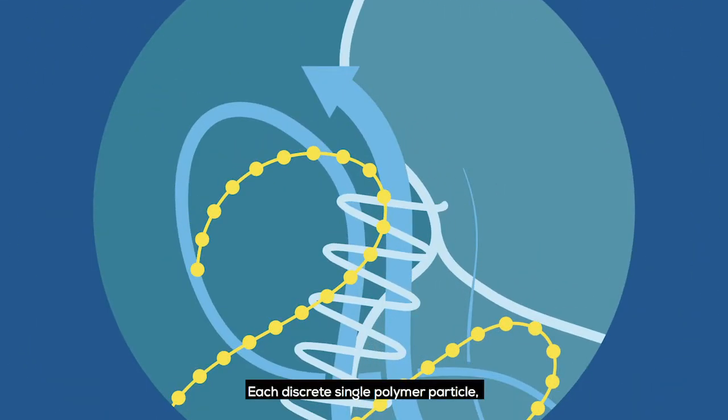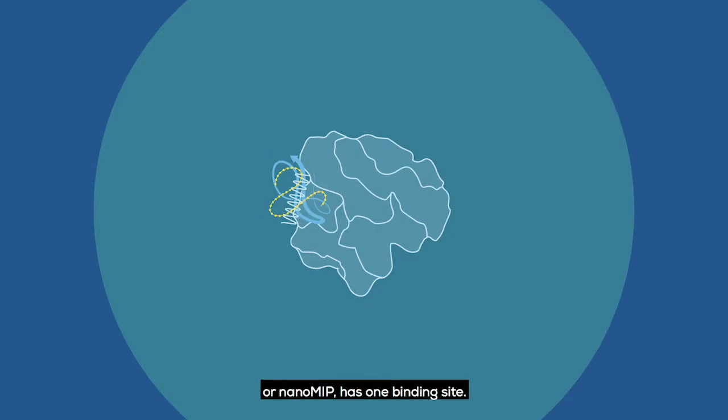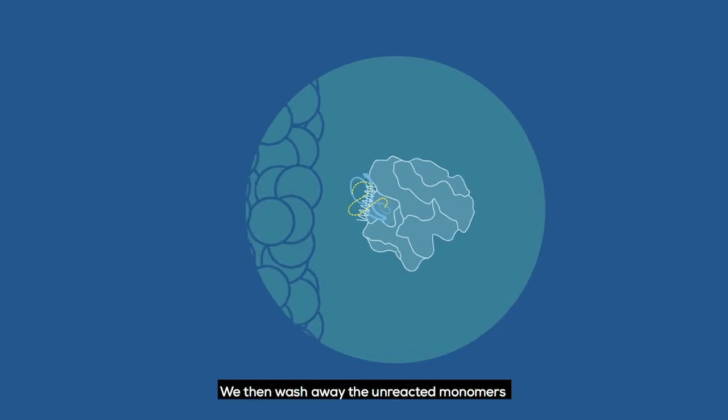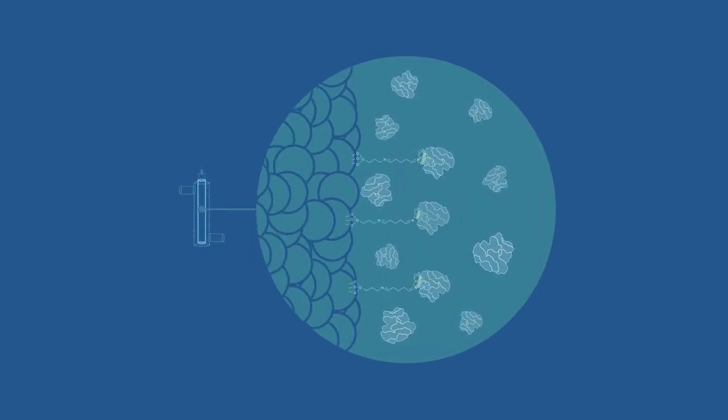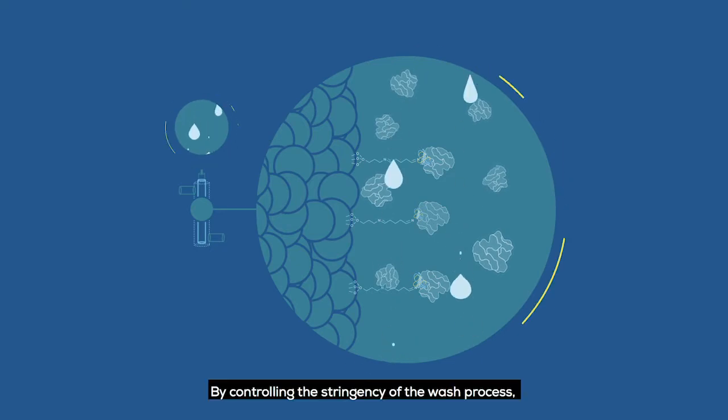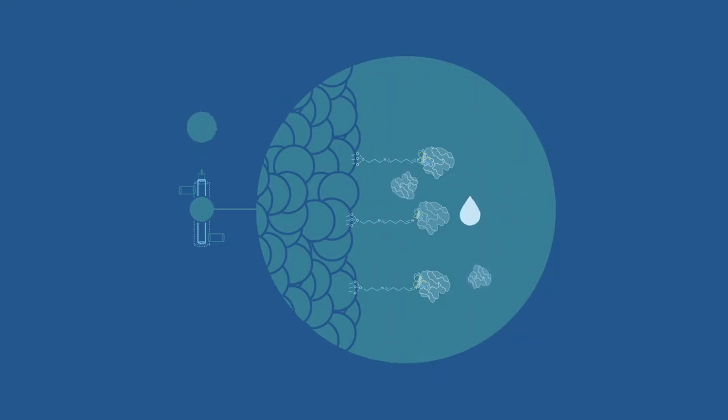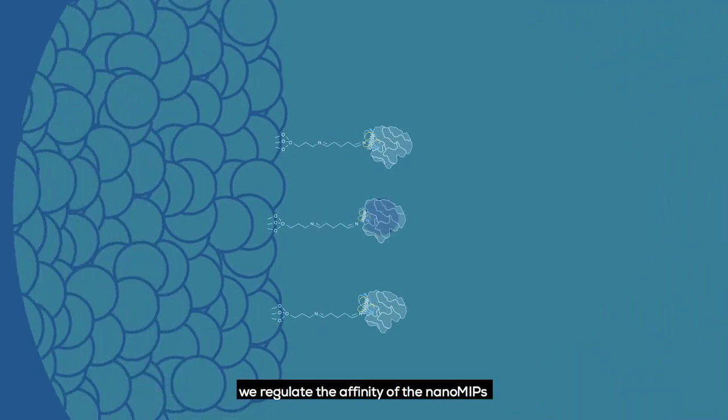Each discrete single polymer particle, or nano MIP, has one binding site. We then wash away the unreacted monomers and low affinity polymers. By controlling the stringency of the wash process, we regulate the affinity of the nano MIPs, which are subsequently harvested.